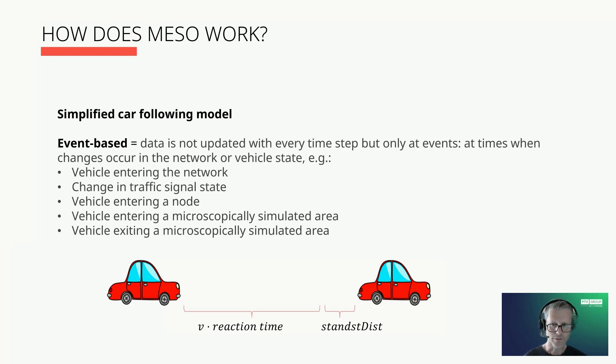You see there are just three parameters for the car following model: the speed, reaction time in seconds, and the standstill distance. All these together determine the gaps between vehicles and thus the capacity on the link.